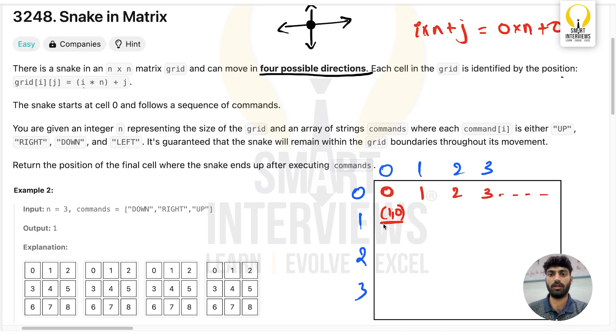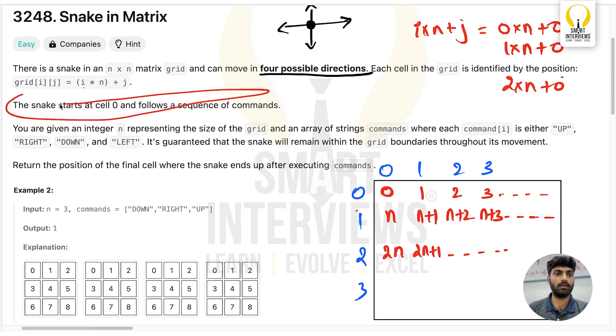Here the row number is 1 and column number is 0, so substituting gives 1×n + 0, which is n. Followed by n+1, then n+2, n+3, and so on. For the second row, it's 2×n, 2×n+1, and so on. The same thing for the third row and all other rows.